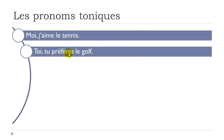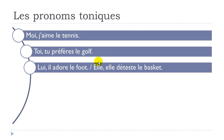TOI, TU PRÉFÈRES LE GOLF — PRÉFÉRER means to prefer. Now for the masculine form: LUI, IL ADORE LE FOOT. LUI is the pronom tonique, IL is the pronom personnel, ADORE means to adore, and LE FOOT — we're talking about football. For the feminine: ELLE, ELLE DÉTESTE LE BASKET. DÉTESTE means to hate, and we're talking about basketball. Even if you see ELLE twice, remember you're insisting — first PRONOM TONIQUE, then PRONOM PERSONNEL.